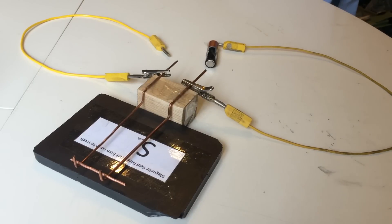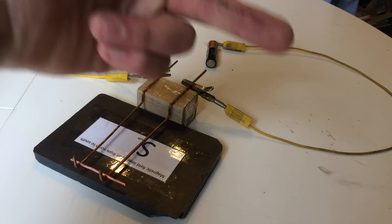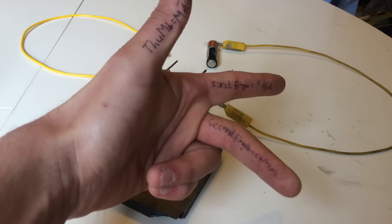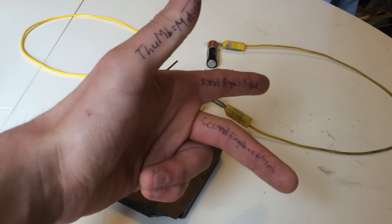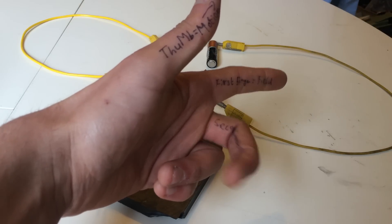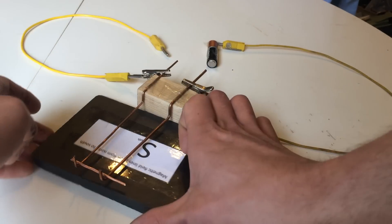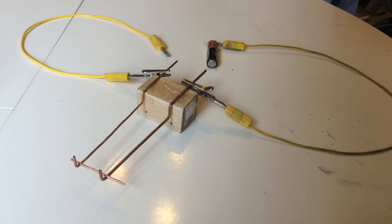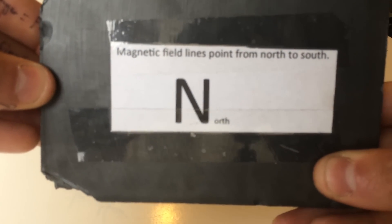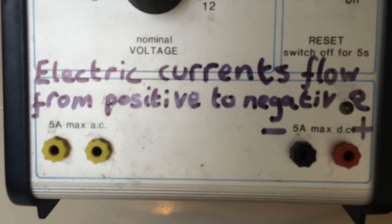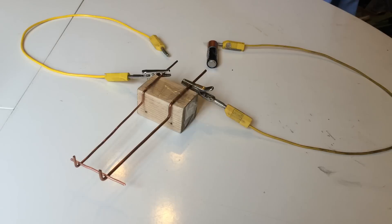Let's have a quick summary. The four facts are: first, hold your fingers orientated like this; second, the thumb is the motion; third, the first finger is the field; and fourth, the second finger is the current. The two conventions are: magnetic fields go from north to south, and electric currents flow from positive to negative. I hope you've enjoyed this video.